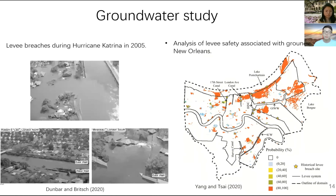As you may know, in 2005 Hurricane Katrina hit New Orleans. The high water in navigational canals and oceans brought by the hurricane overflowed the levees and caused levee breaches. Based on research, some of those levee breaches were partly due to groundwater, as shown in the pictures of levee breach locations. These levee breaches were partly a result of high groundwater pressures.